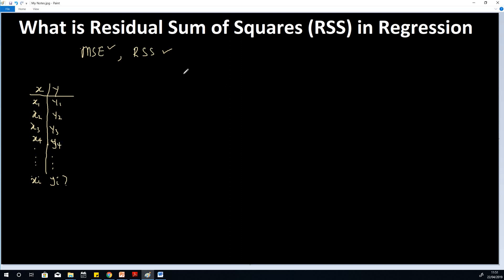The procedure is simply this way. Let's say you want to do it manually and you have x and y values. The first thing you do is plot these values — this is x1, y1; this is x2, y2; this is x3, y3; and this is x4, y4.